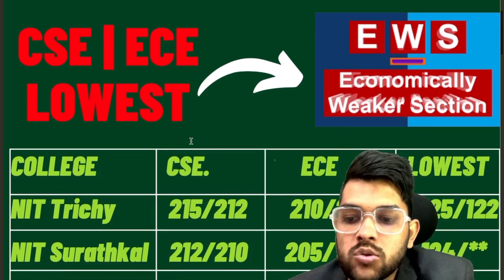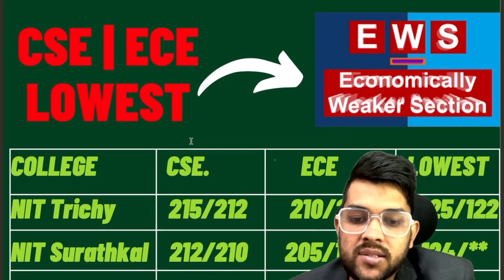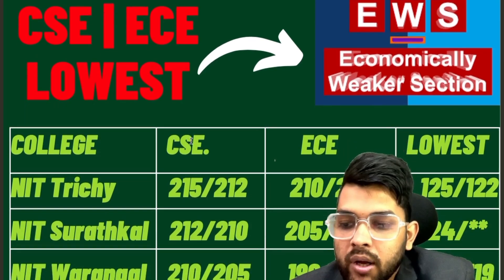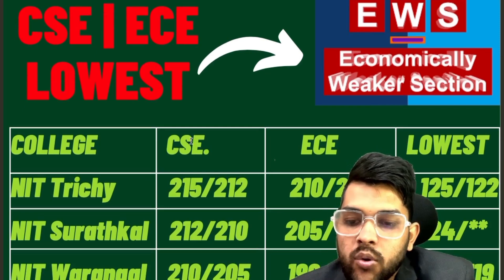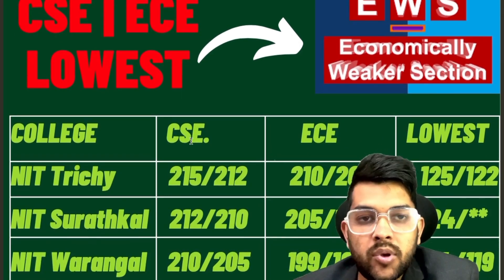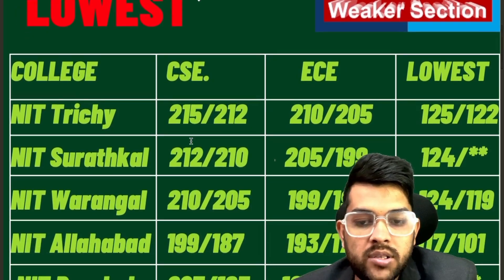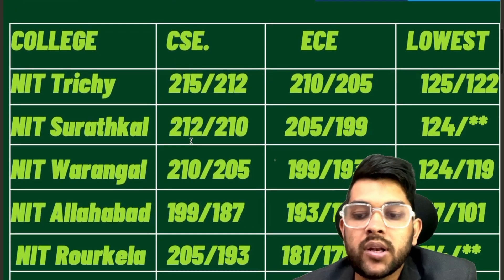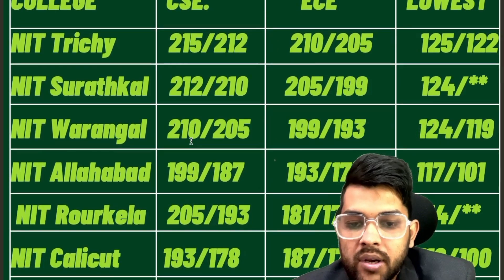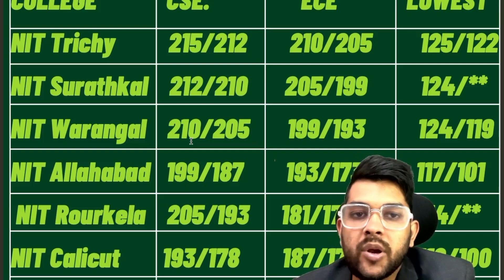For NIT Surathkal: 212 and 210 for CSE, EC 205, lowest 124. For NIT Warangal: 210, 199, lowest 124. I am discussing only for male — for female, check after the slash. For Allahabad: 199, 193, lowest 117. For Rourkela: 205, 181, lowest 114. For Calicut: 193, 187, lowest 118. For any other particular branch, you can comment below and I will reply.